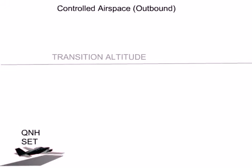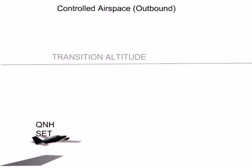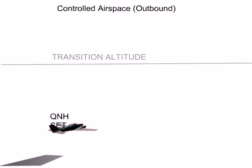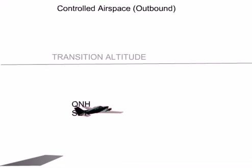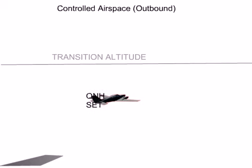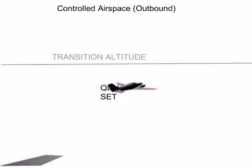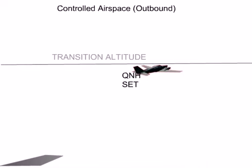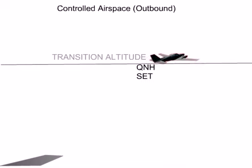Transition Altitude. The Transition Altitude is that specific point in the airspace at which an aircraft on the climb will change their altimeter setting from QNH to QNE, due to the fact that the original barometric pressure setting is no longer reliable.